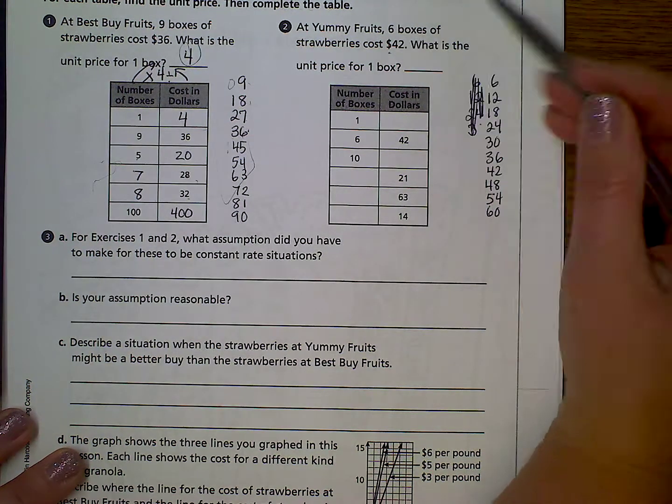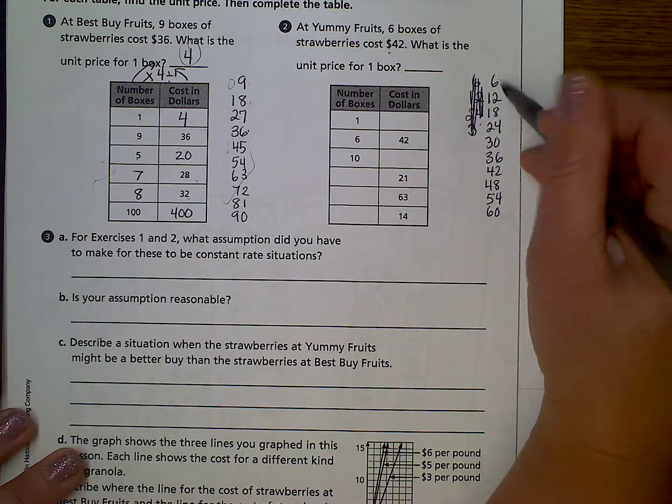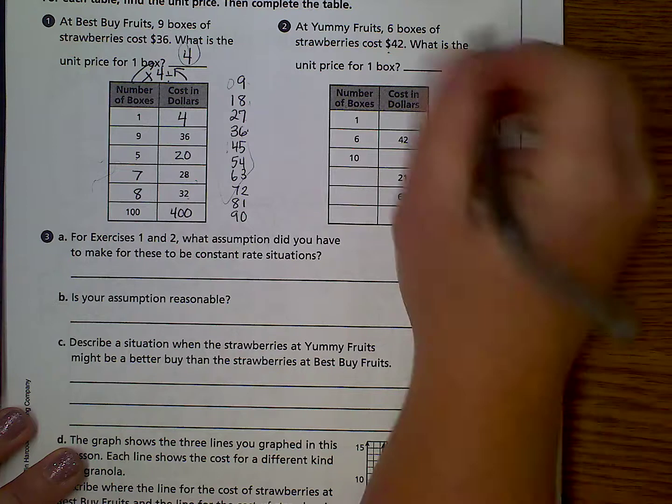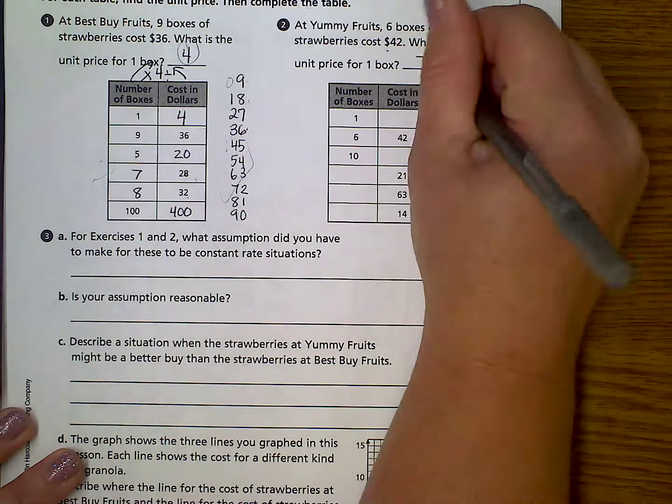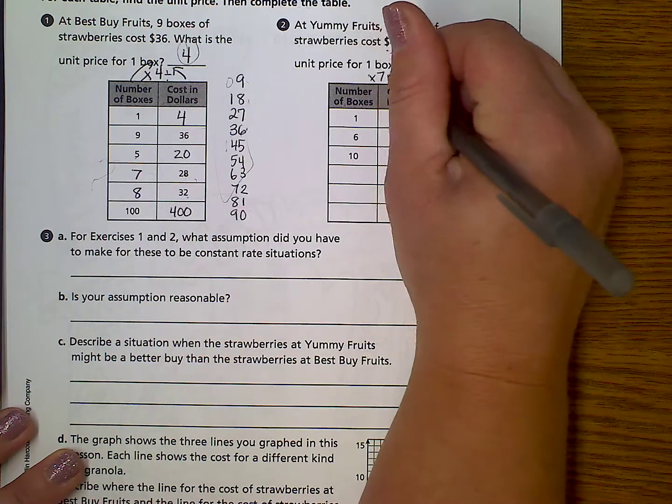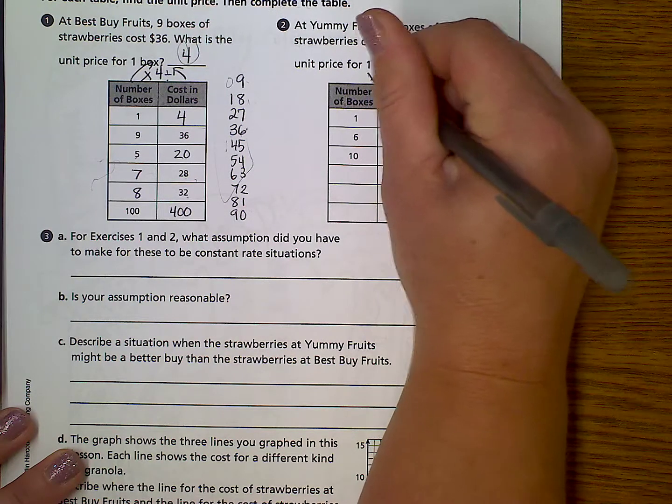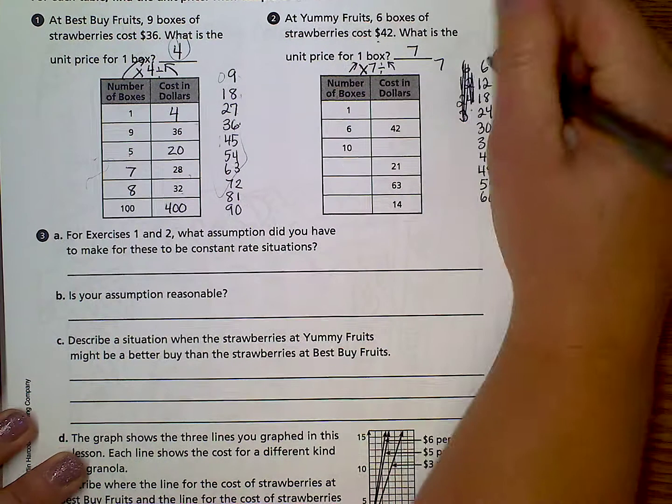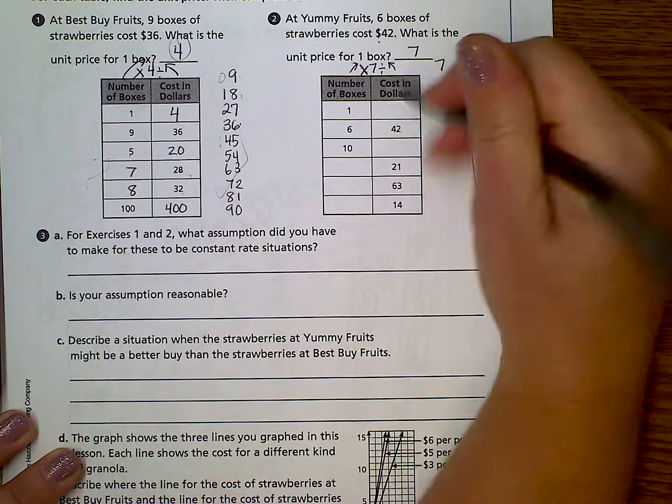So how many does each one cost? So if there's 42, 1, 2, 3, 4, 5, 6, 7. So each one costs $7. So now, that means we're going to multiply by 7 or divide by 7, depending on which way we're going. And now, skip counting by 7s would probably be the best bet for these answers.